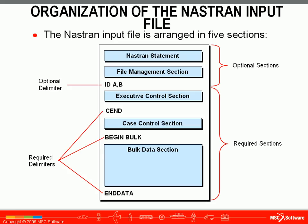The NASTRAN input file is a text file arranged in five sections. The first two sections, the NASTRAN statement and file management section, are optional. Then the executive control section is required, and it specifies the type of analysis that will be performed.